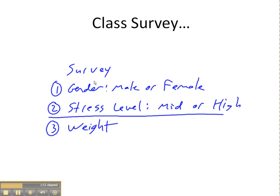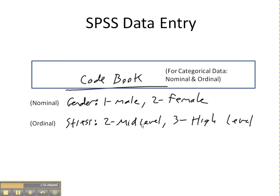To collect data, we had a simple anonymous survey where students reported their gender, their stress level, and their weight. In terms of recording the data in SPSS, SPSS uses a number to indicate a category. We used 1 for male and 2 for female as nominal data. For stress as ordinal data, 2 meant mid-level stress and 3 meant high-level stress.